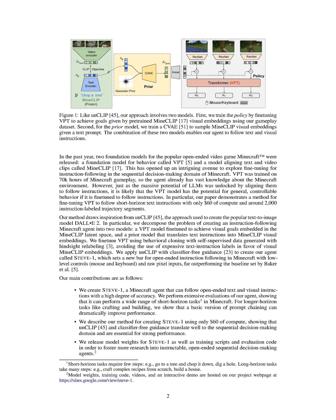Our main contributions include creating a Minecraft agent that can follow open-ended text and visual instructions accurately. We extensively evaluate our agent, showing that it can perform a wide range of short-term tasks in Minecraft. For longer-term tasks like crafting and building, we show that a basic version of prompt chaining can significantly improve performance. We describe our method using only 60 hours of computational resources, and we also release the model weights for our agent, along with training scripts and evaluation code, to encourage further research into instructable, open-ended sequential decision-making agents.